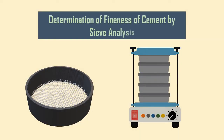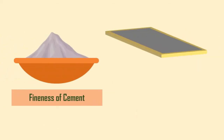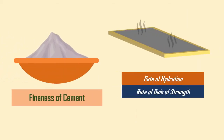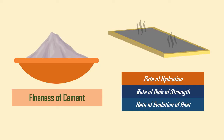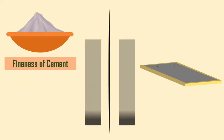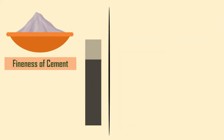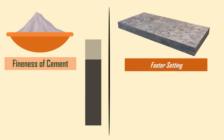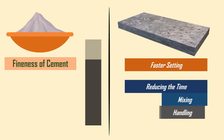The fineness of cement has a positive impact on the rate of hydration, which in turn impacts the rate of gain of strength and the rate of evolution of heat. The increase in fineness of cement increases the drying shrinkage of concrete. Furthermore, having higher finer cement particles leads to a faster setting, reducing the time for mixing, handling and placing.